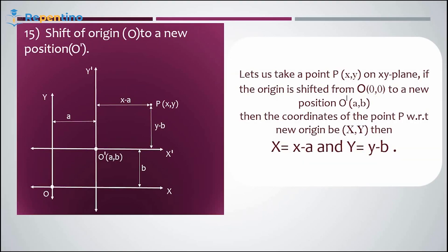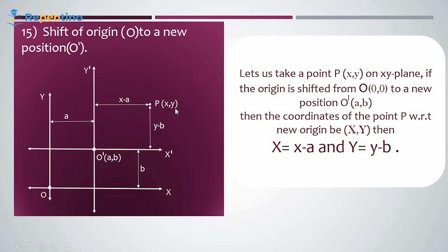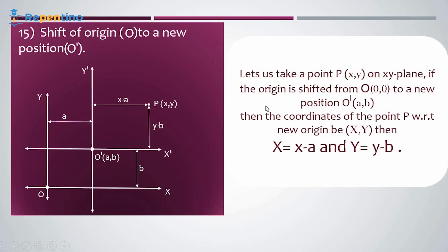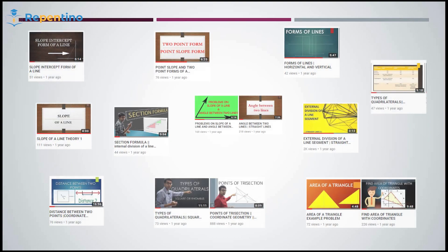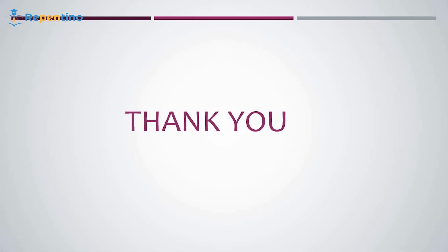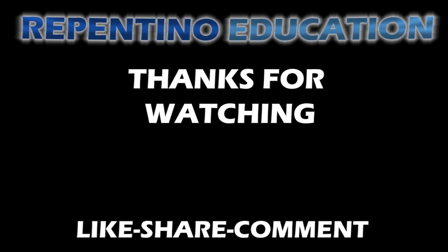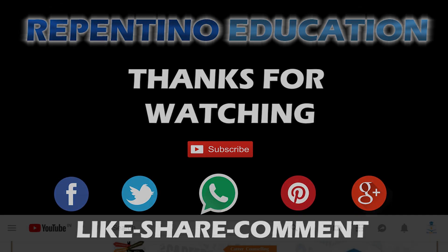Shift of origin from O to a new position O-dash: for a point P with coordinates (x, y) with respect to the old origin (0, 0), if the origin is shifted to O-dash with coordinates (a, b), then the new coordinates of P with respect to O-dash are capital X and capital Y, where X equals x minus a and Y equals y minus b. These are the key formulas for coordinate geometry. This covers only basics and formulae for a one-day revision — for detailed explanation, please watch our previous videos. Thank you, and if you liked the video, please hit the like button, comment, share it with your friends, and subscribe for future videos.